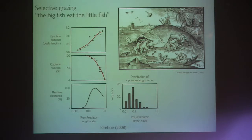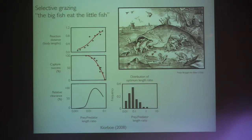We have the idea that the big fish eat the little fish — different size classes have a preference for different size classes of prey. The reaction distance, basically the detectability of prey, increases as prey size gets bigger relative to the predator, but then they just get too big to eat. Combining those two effects gives an optimal predator-prey ratio and size-specificity of grazing.